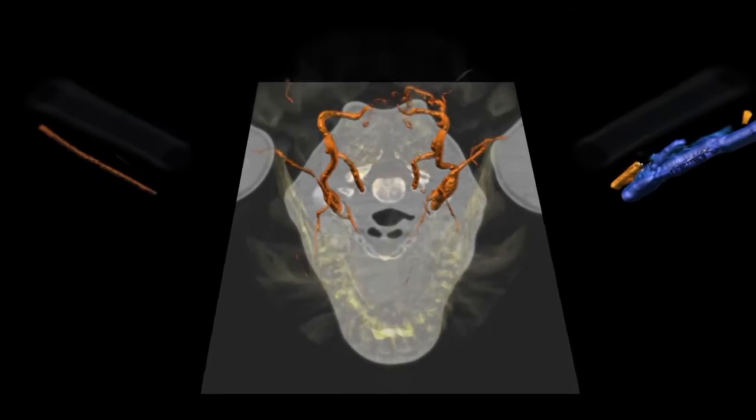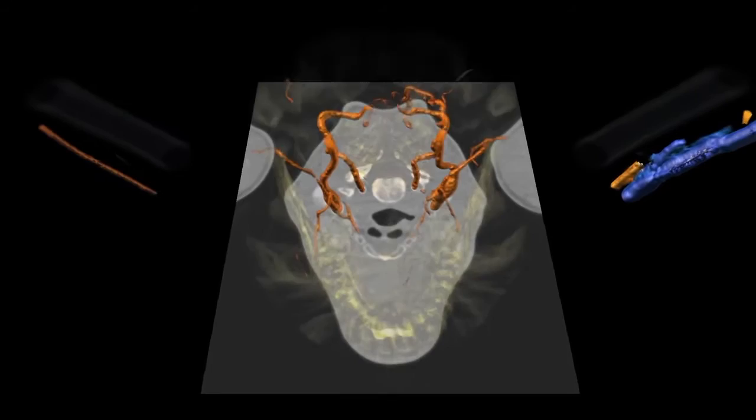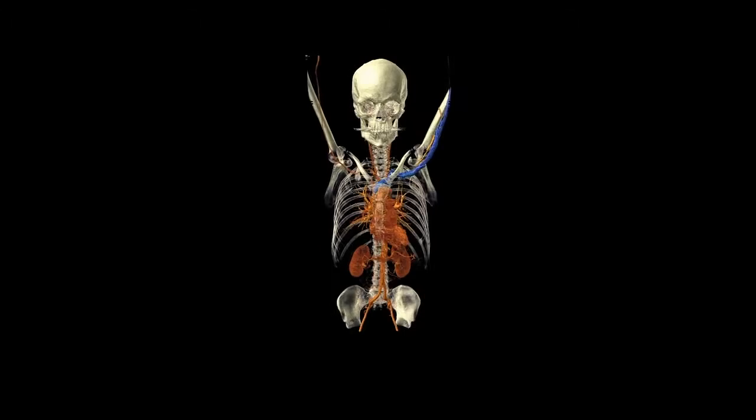In medical images, vertebrae surround and partially obscure the arteries, impeding the examination process for doctors.